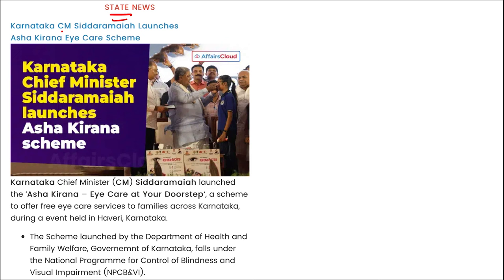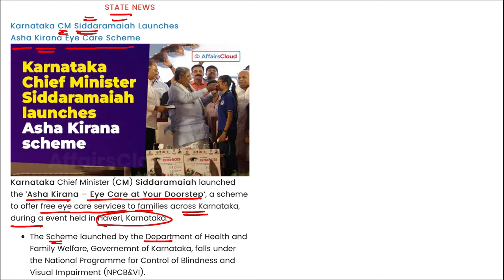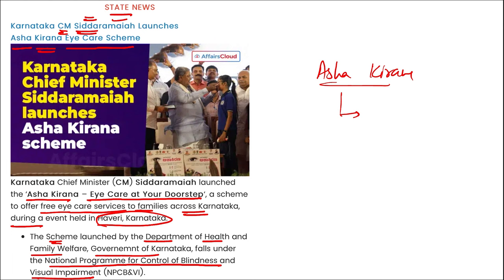Karnataka Chief Minister Siddaramaiah launched the Asha Kirana Eye Care scheme — Eye Care at Your Doorstep — to offer free eye care services to families across Karnataka. The event was held in Haveri, Karnataka. This scheme was launched by the Department of Health and Family Welfare under the National Programme for Control of Blindness and Visual Impairment.